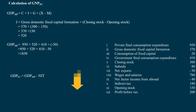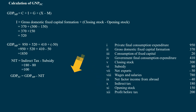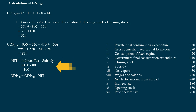GDP at Factor Cost = GDP at Market Price minus Net Indirect Tax. Net Indirect Tax = Indirect Tax minus Subsidy = 180 minus 80 = 100 Crores.